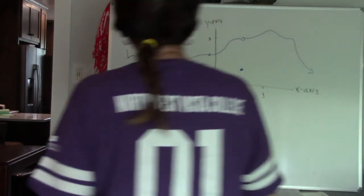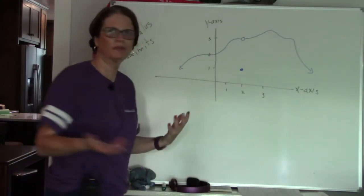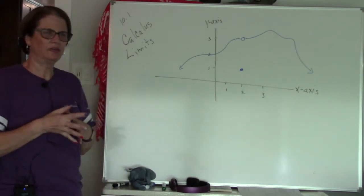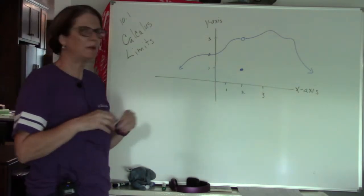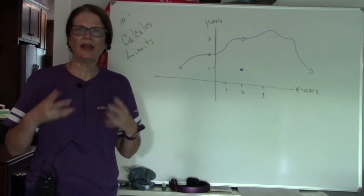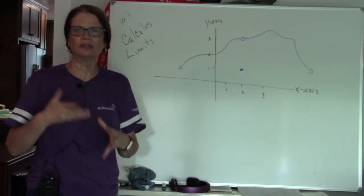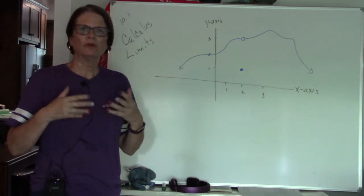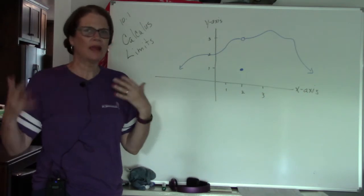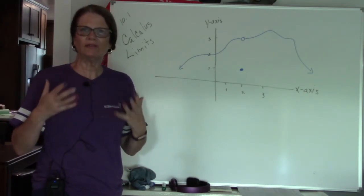In the last video, we talked about the difference between algebra and calculus. Algebra talks about a specific point — what's going on at a specific location on our graph. With calculus, we're going to look at what's around it. So that's the idea of a limit.